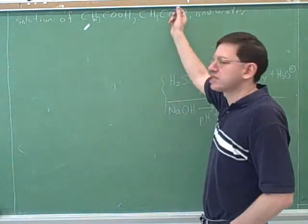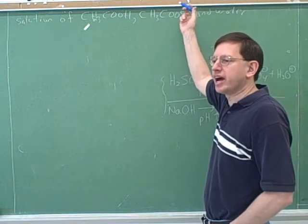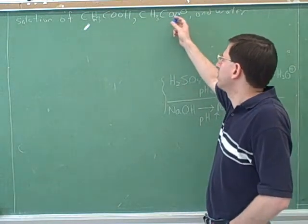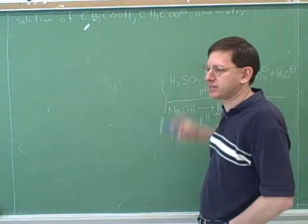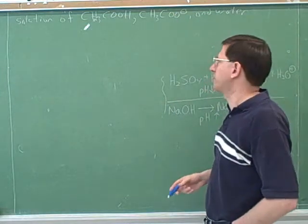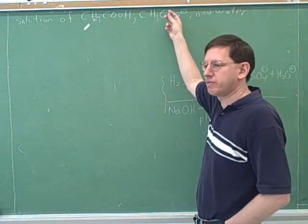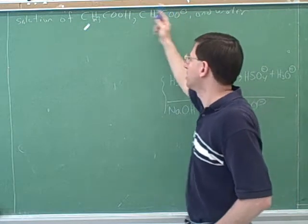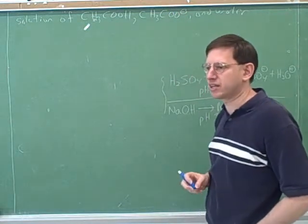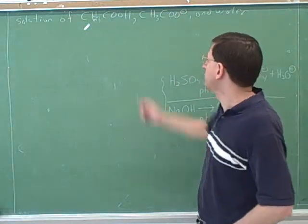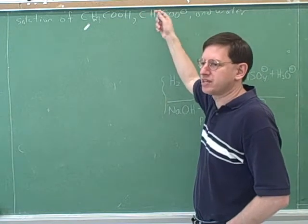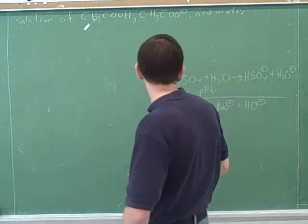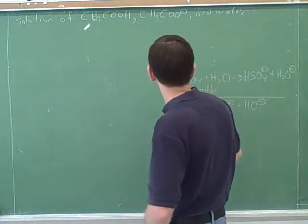I haven't shown the spectator ion — you could show that or not. If I had, I could have called this potassium acetate or sodium acetate, and we would call that the conjugate salt. But it doesn't matter whether we call it the conjugate salt or the conjugate base; it's the conjugate of the acetic acid. This should be a buffer because it's a weak acid and its weak conjugate.